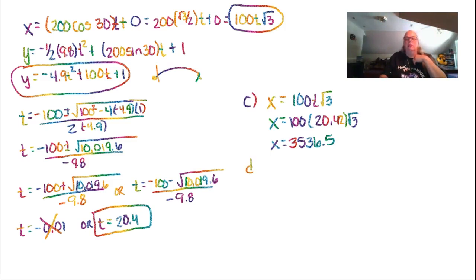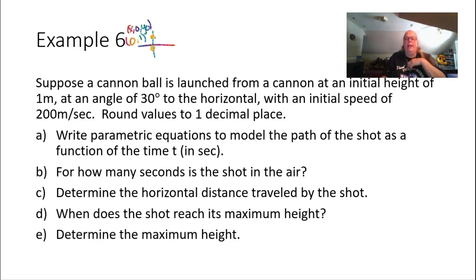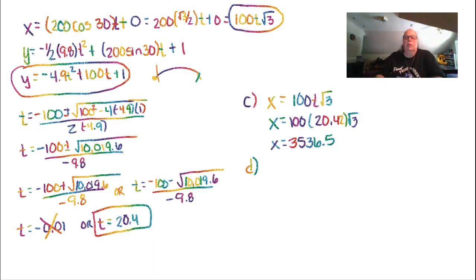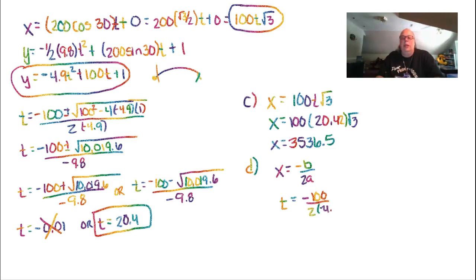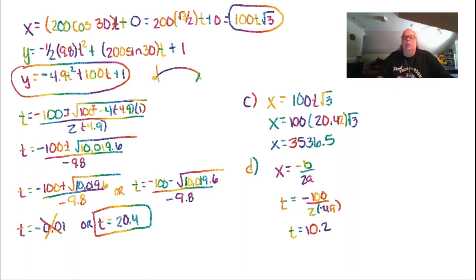For part D, when does the shot reach maximum height? We use the vertex formula t equals negative B divided by 2A on the y equation. That gives negative 100 divided by 2 times negative 4.9, which equals negative 100 divided by negative 9.8, which equals approximately 10.2 seconds.